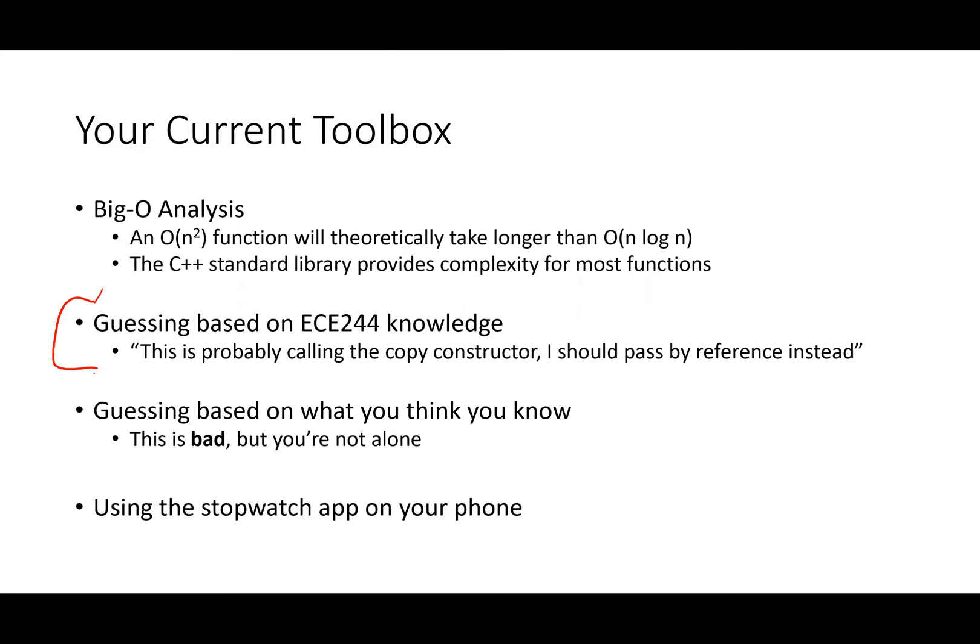You have knowledge based on 244 about what deep copies are — this is probably calling the copy constructor. Deep copies can be slow for big data structures. So after you get your big O down to a good value, the next most common thing that can be slowing a program down unexpectedly is doing big copies — passing an entire vector by value, or assigning one big vector or unordered map to another. Those things can be slow, so watch out for those.